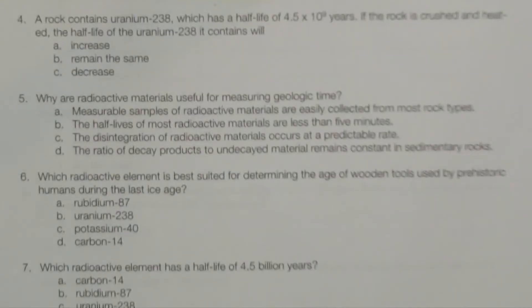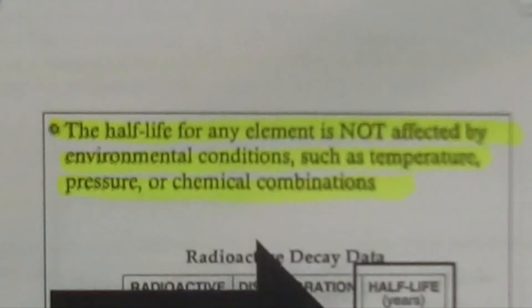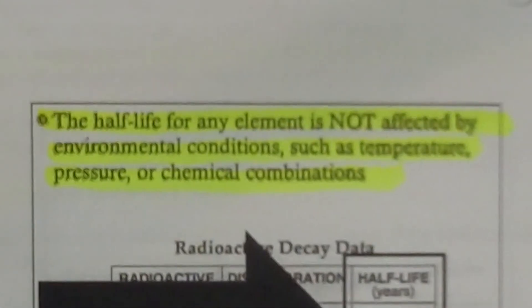Number four: a rock contains uranium-238, which has a half-life of 4.5 × 10⁹ years. If the rock is crushed or heated, the half-life of the uranium-238 it contains will remain the same. This goes back to the idea just discussed: the half-life for any element is not affected by environmental conditions such as temperature, pressure, or chemical combinations.